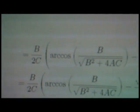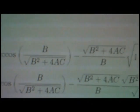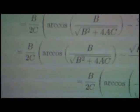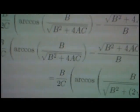And that's equal to b over 2c times in brackets arcus cosinus of b over square root b squared plus 4ac.